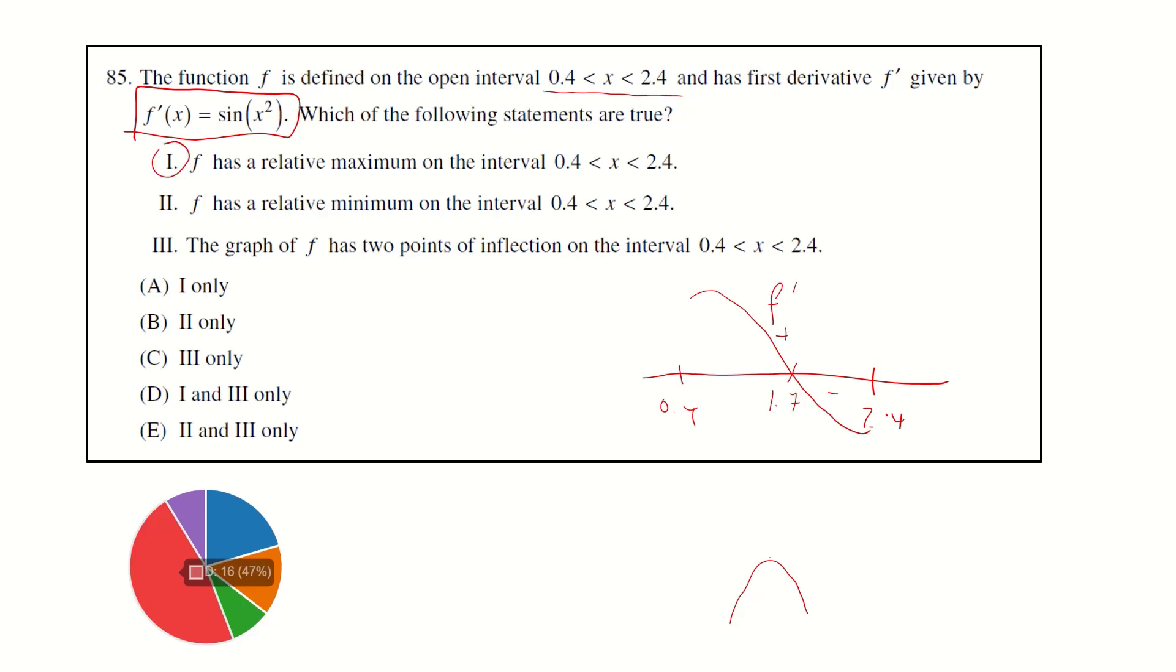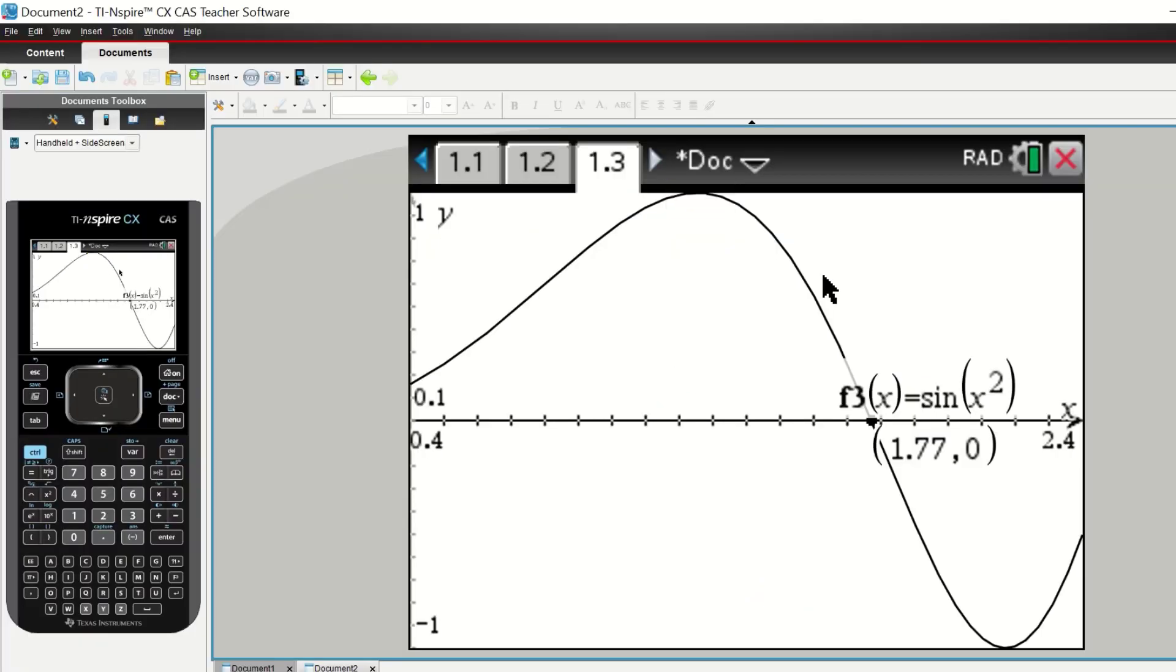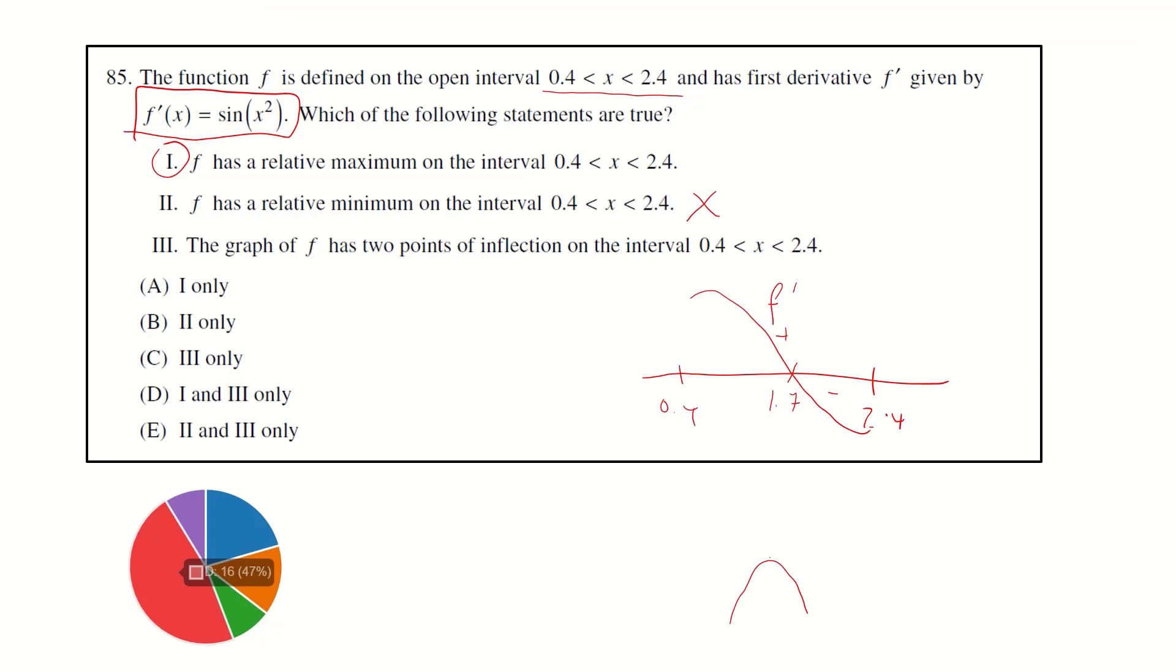There's no change of f prime from negative to positive, so option two is not correct. The graph has two points of inflection. We get a point of inflection when the graph of f prime changes from increasing to decreasing, and another from decreasing to increasing. So you have two points of inflection corresponding to the graph y equals f(x). Therefore this is also correct. One and three are correct. The answer is D.